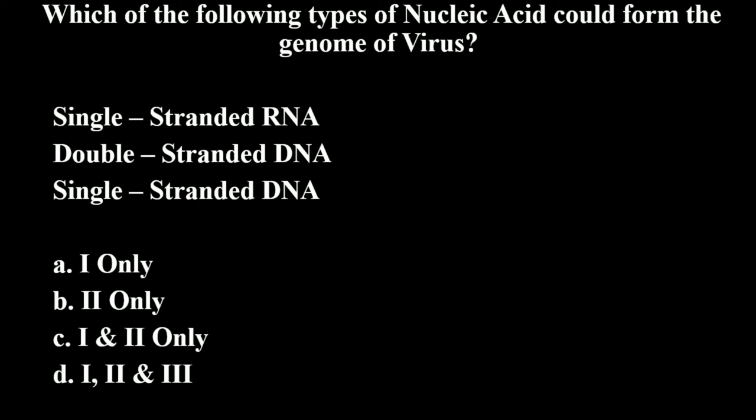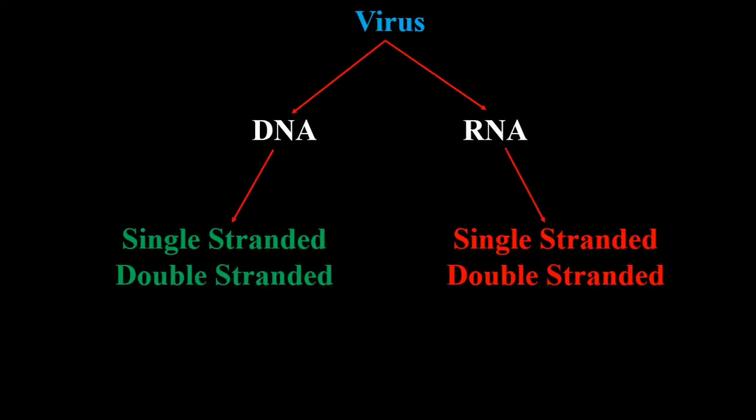Welcome everyone. This question asks: which of the following types of nucleic acid could form the genome of a virus? The answer choices are: single-stranded RNA, double-stranded DNA, or single-stranded DNA.